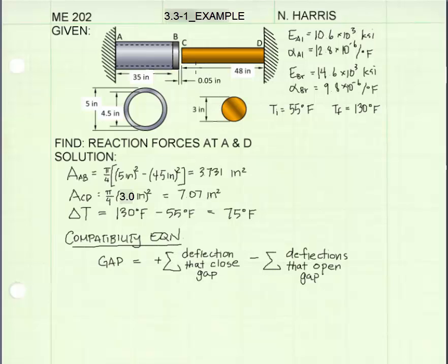In this case, the thermal deflections want to close the gap, because as a result of the increase in temperature, the thermal deflections are making the members AB and CD longer. That will cause this gap to close. But when they contact each other and then press against each other, those forces are going to want to make the gap open back up. So let's apply this rule to our problem.